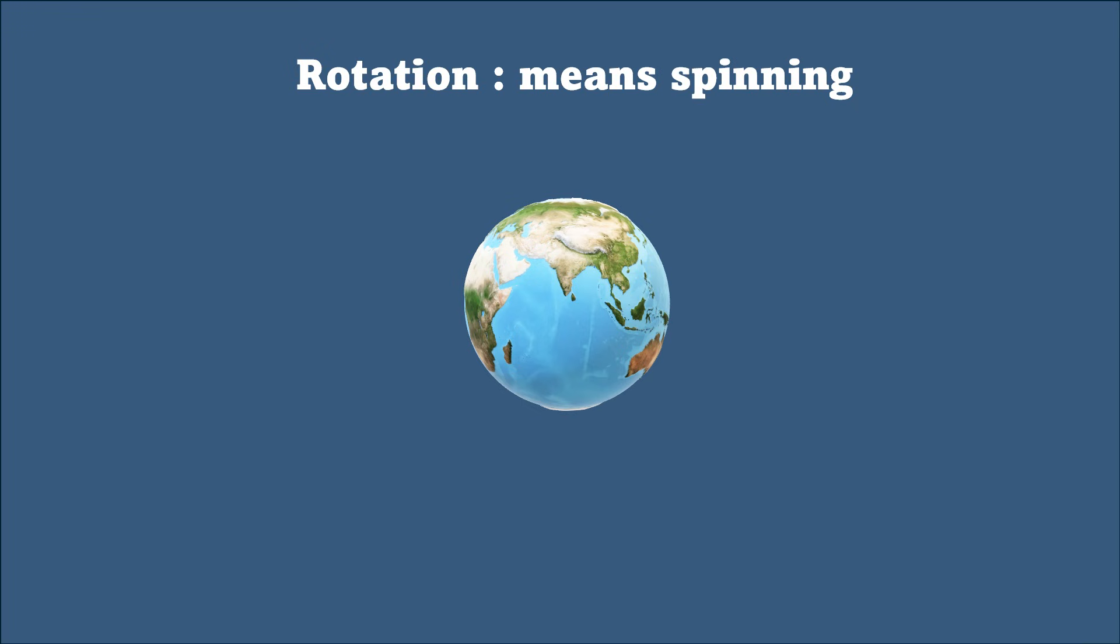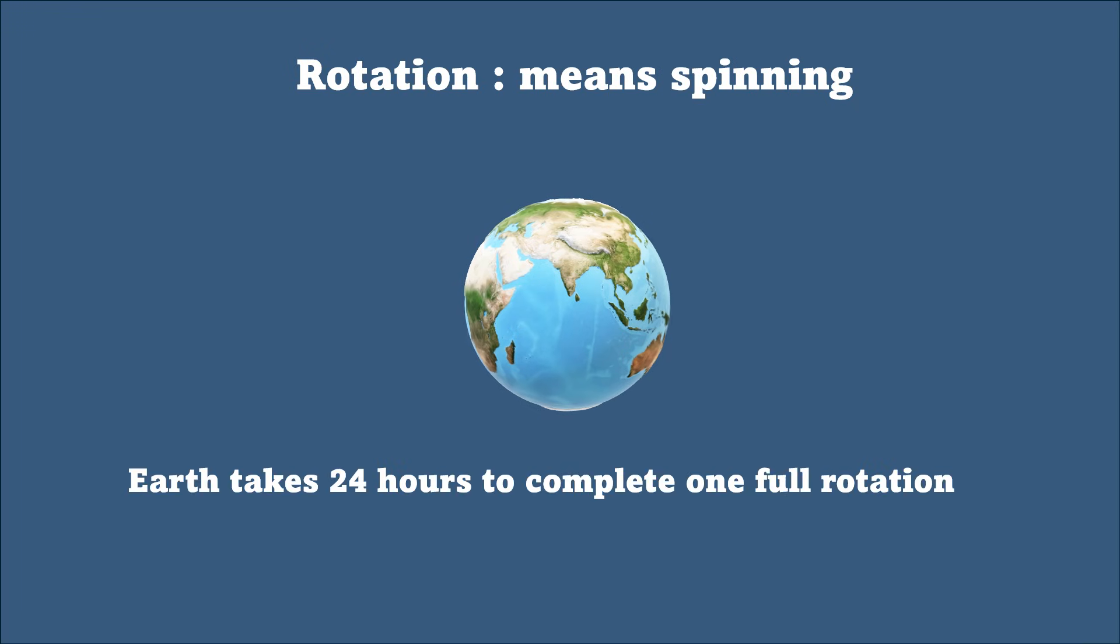Similarly, Earth also spins. It spins around its axis. So Earth takes 24 hours, that is one day, to complete one full rotation.